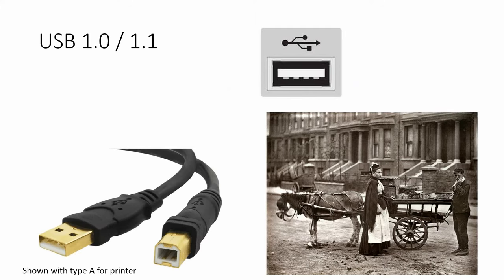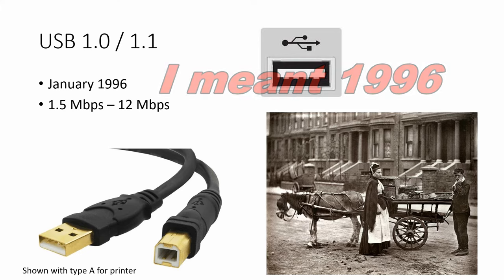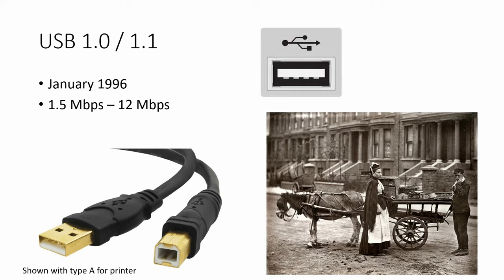Looking at the series of USBs, we started off with USB 1.0, which quickly evolved into 1.1. You can see the picture has the USB side, but the other end has a Type A for the printer — it could be any type on the other end. The USB 1.0 and 1.1 typically have a white port. Originally developed in January 1996, it had speeds from 1.5 megabit per second up to 12 megabit per second, with a maximum cable length of 3 to 5 meters.